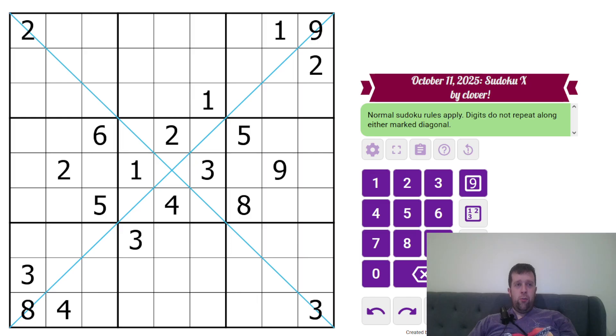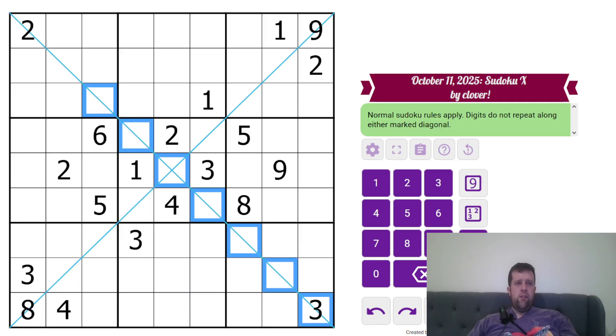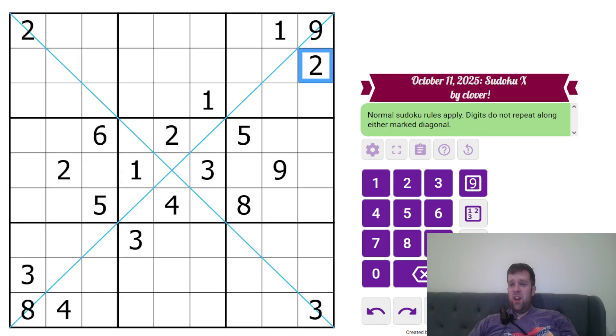So what that means is normal Sudoku rules apply. Each box, each row, and each column must contain the digits of 1 to 9 once each. Now, digits also do not repeat along these marked diagonals. Yeah, that's it. That's all you need to know to solve today's puzzle.